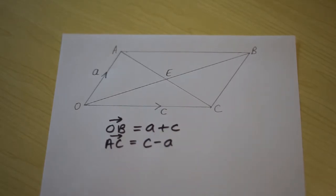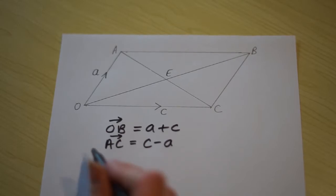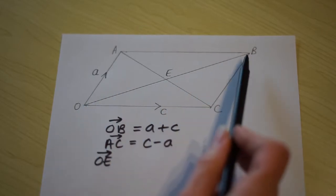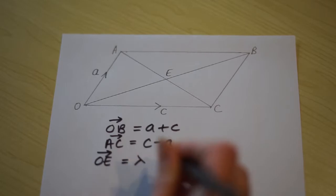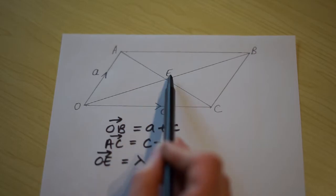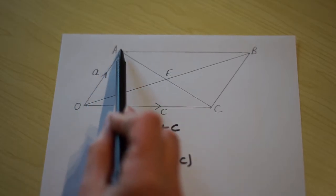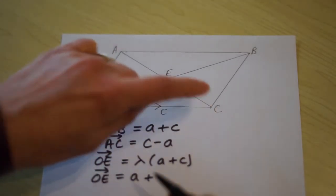We will now find two different expressions for OE. So OE is a fraction along OB, so we'll write that down as that. We can find another route to describe OE by going up to A and then going a fraction along AC. So let's write that down: OE, up to A and then a fraction along AC.